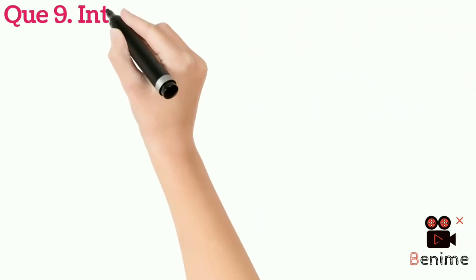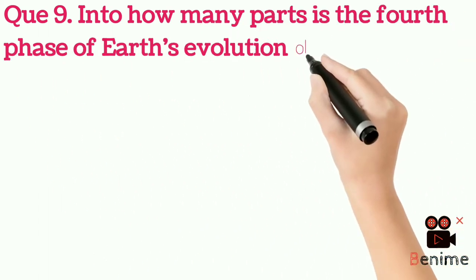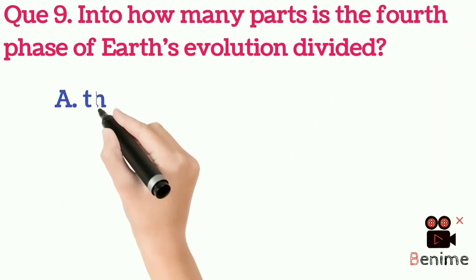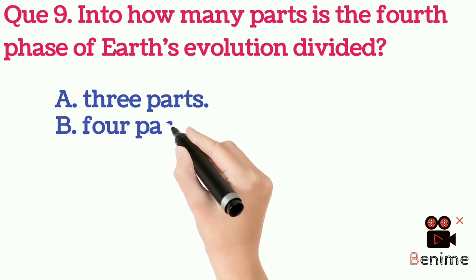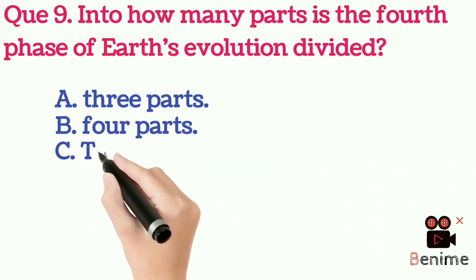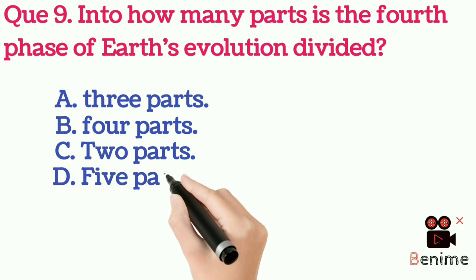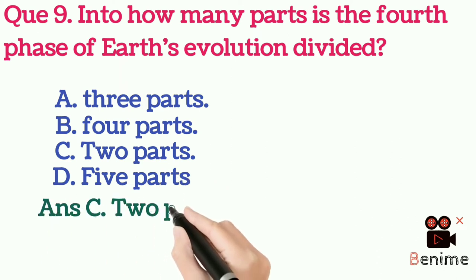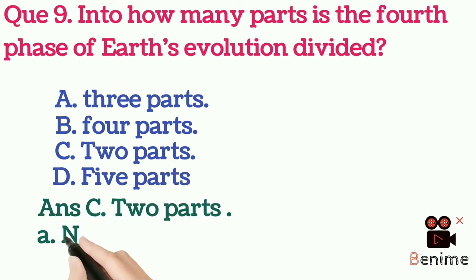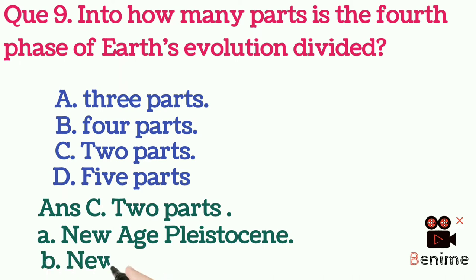Question 9: Into how many parts is the fourth phase of Earth's evolution divided? A. Three parts. B. Four parts. C. Two parts. D. Five parts. Answer C: Two parts — A. Pleistocene (New Age) and B. Holocene (New era).